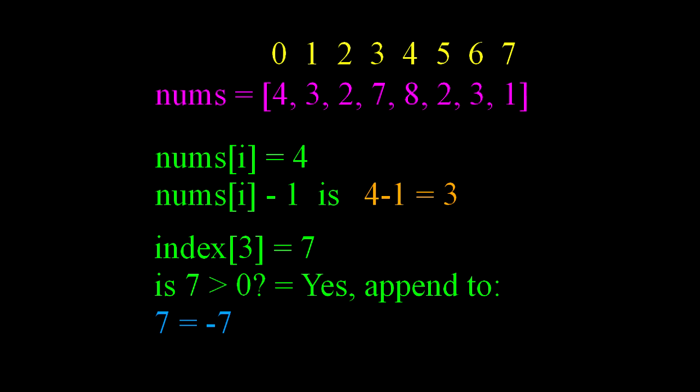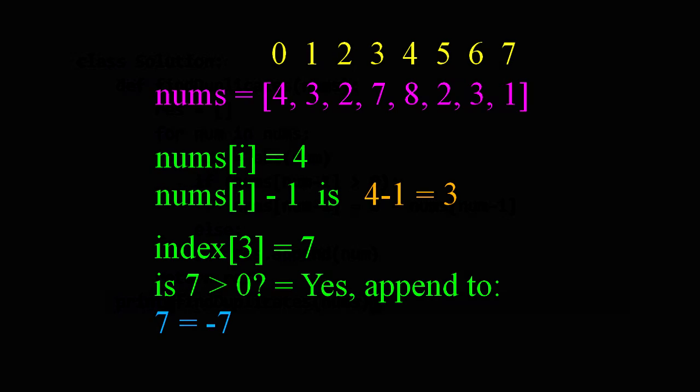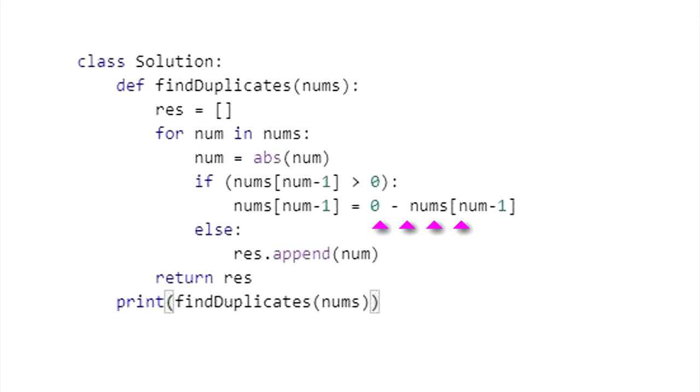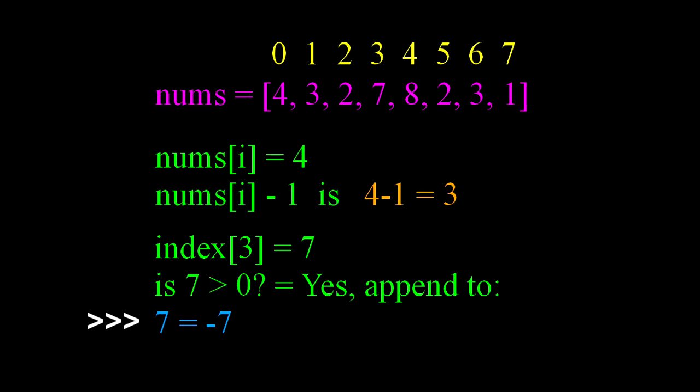What this code does here is take the integer at the first index position 0, which is 4, subtract 1, where we get 3, which then calls index 3, which is 7. And if that element is greater than 0, it is, it gets reassigned into negative 7. That's what this portion here does. 0 minus 7 becomes negative 7. Now the array looks like this.